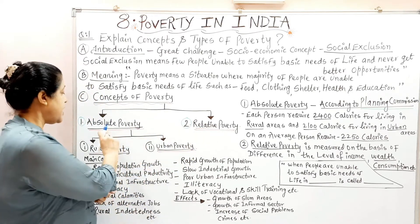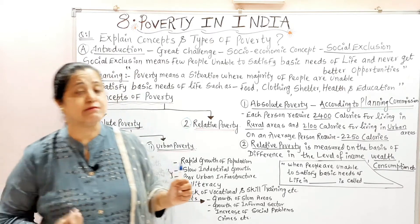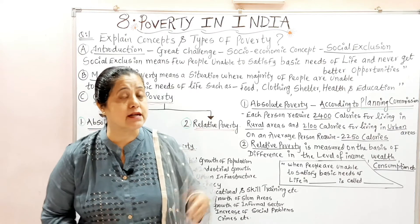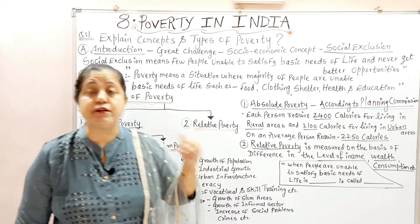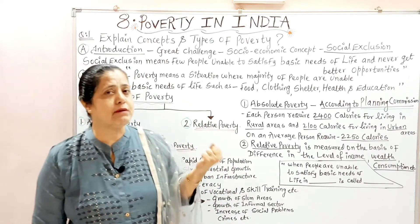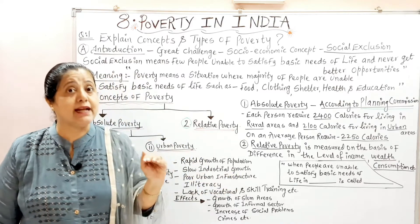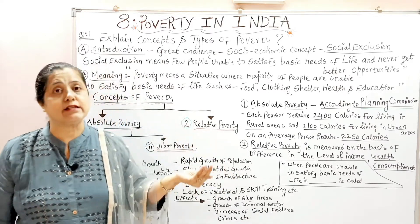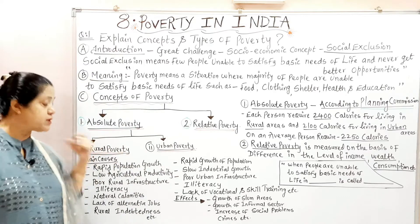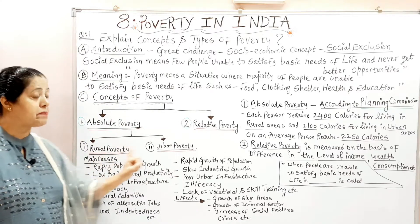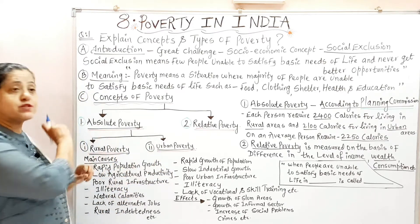When we talk about absolute poverty, our planning commission always considers absolute poverty on the basis of minimum calories from food intake. How many minimum calories should we get from what we consume? In different areas — rural areas and urban areas — how many calories should be received? That is why absolute poverty is divided into two parts: rural poverty and urban poverty.